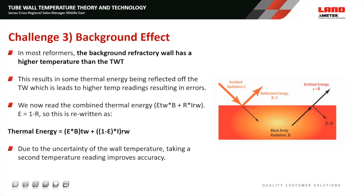The third challenge is background effects. The background refractory in a reformer is often higher in temperature than the tube wall. The tubes are being heated by radiation from the refractory, so what our pyrometer sees is the incident radiation from the refractory combined with the radiation emitted from the tube. We need to ensure our final reading corrects for this additional thermal energy from the background using the correction equation shown. We always need to take background temperature measurements to avoid reading too high. The incident radiation effect will be higher with a more reflective surface, which is why we need to correct for both emissivity and background effect.